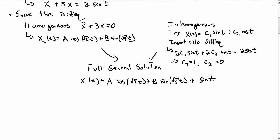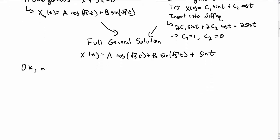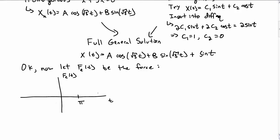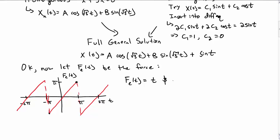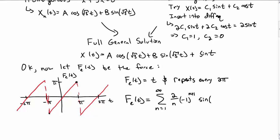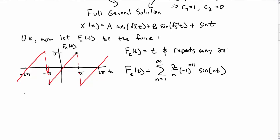That was just a warm-up on how to solve these types of differential equations. What I really want to consider is an external force that is not just one term, but rather something that looks like a sawtooth wave. For the sawtooth, we say the function is t and repeats every 2π. We can represent that as a Fourier series: the sum over n of (2/n)·(−1)^(n+1) · sine of nt.